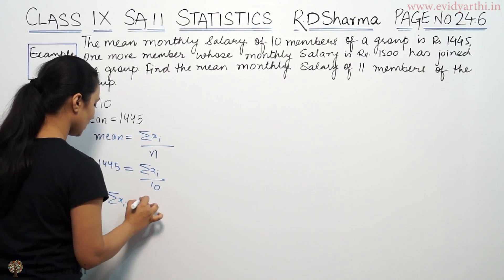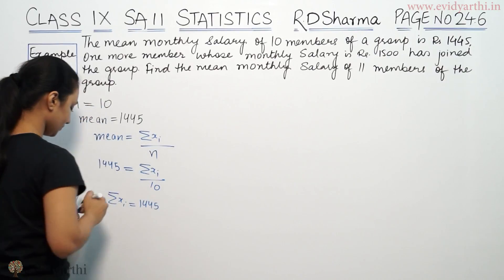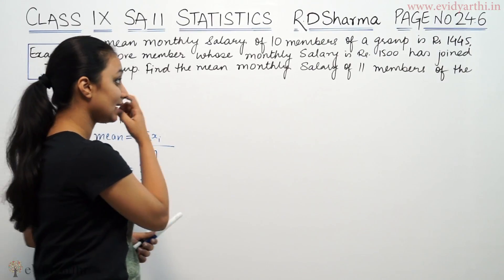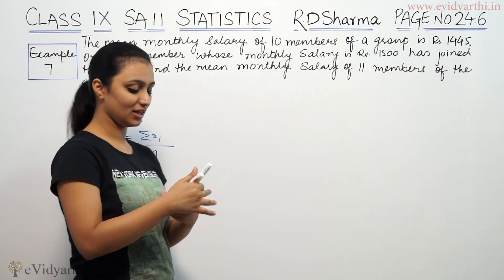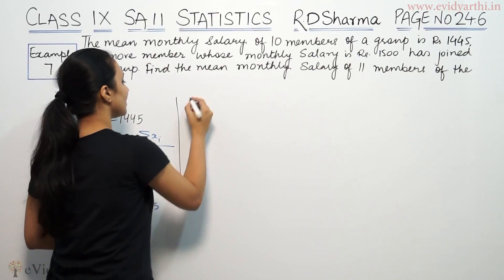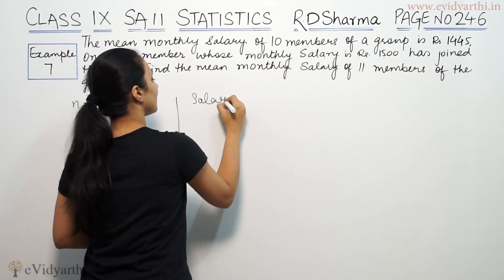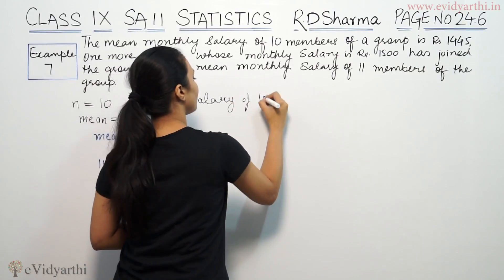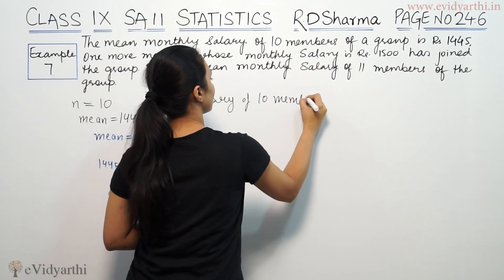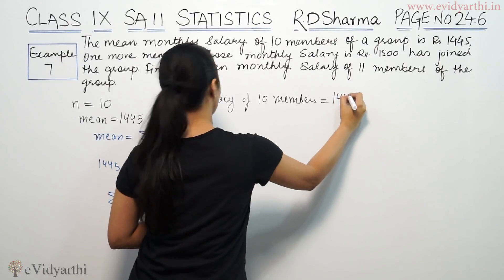Sum Xi will be 1445 into 10. This is basically salary of 10 members, which is 14450.